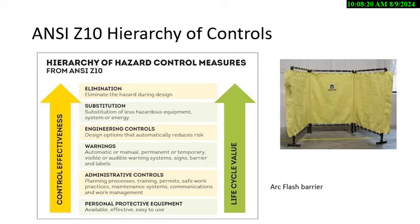Elimination is the first one and substitution is the next — for example, you'd substitute a cancer-causing chemical in a solvent for a non-cancer-causing one. Ventilation is a common engineering control. Dust controls, barriers for noise — those are engineering controls. They also added a new one: warnings, which could be visible or audible alarm systems before things happen, as well as signs, barriers, and labels.